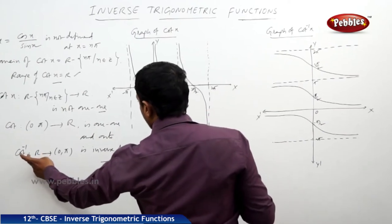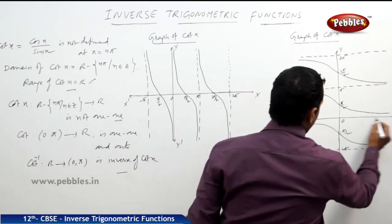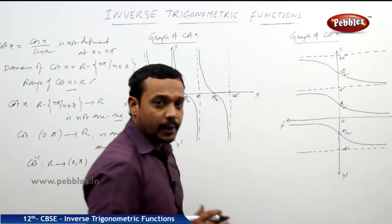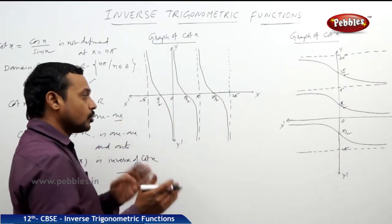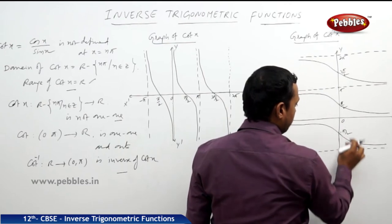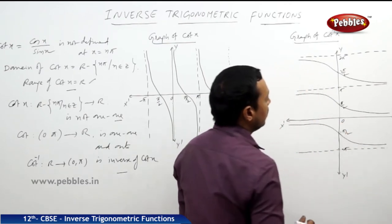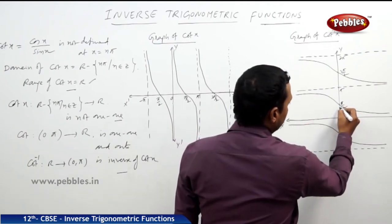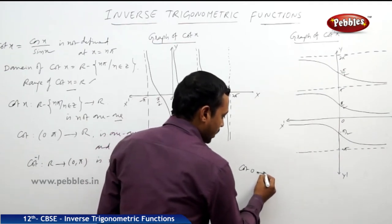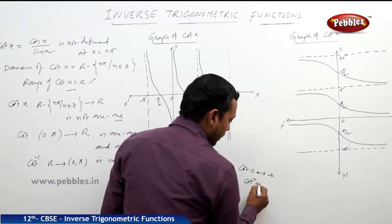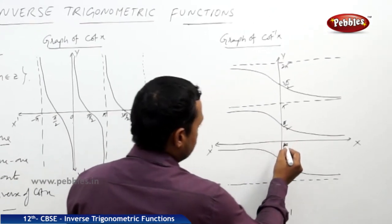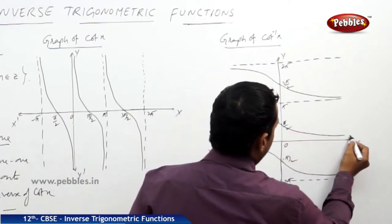The domain of cot inverse x is R, so we can take all real values from minus infinity to plus infinity on the x-axis. The range is (0, pi), or (pi, 2pi), or (2pi, 3pi), etc. As x tends to infinity, cot inverse x tends to 0, since cot 0 tends to infinity. Cot pi by 2 equals 0, therefore pi by 2 equals cot inverse 0. So at x equal to 0, cot inverse 0 equals pi by 2.